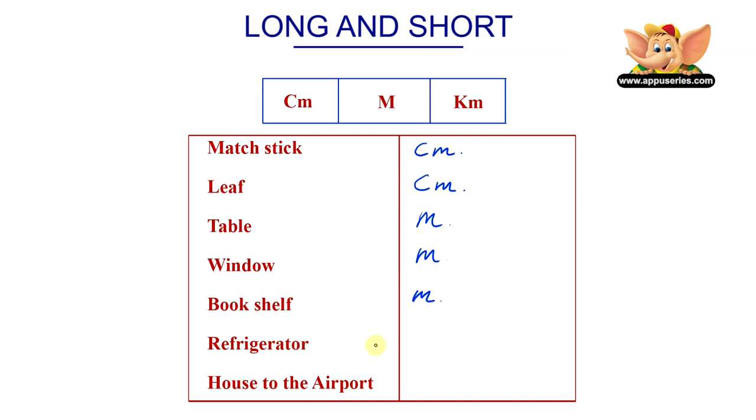Refrigerator. Also goes to meter. Doing so good so far. Alright, this one. Distance from your house to the airport. Yep, you got it right. Kilometers!